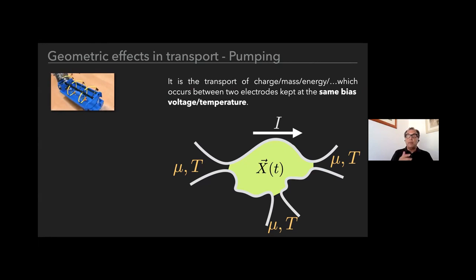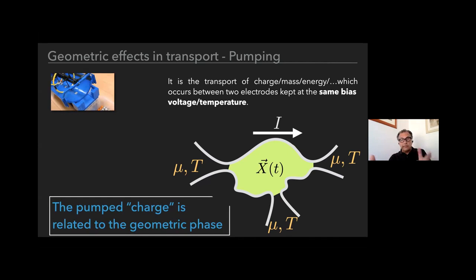Even without applying any bias to the different electrodes, if the parameters—gate voltage, magnetic field, or whatever—are changed slowly, we talk about adiabatic pumping. The quantity which is transported is in several ways connected to the Berry phase, and this pumping has a very long history.